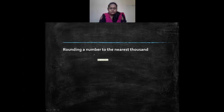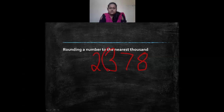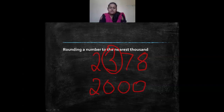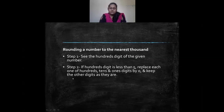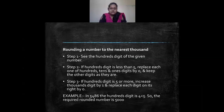Another example: 2378 rounded to the nearest thousand. Circle the hundreds place — the digit is 3, which is less than 5. So keep the thousands place as it is: 2, and the rest of the digits become 0. So 2378 is rounded off as 2000. For 5486 rounded to the nearest thousand: hundreds place is 4, which is less than 5, so it is rounded off as 5000.